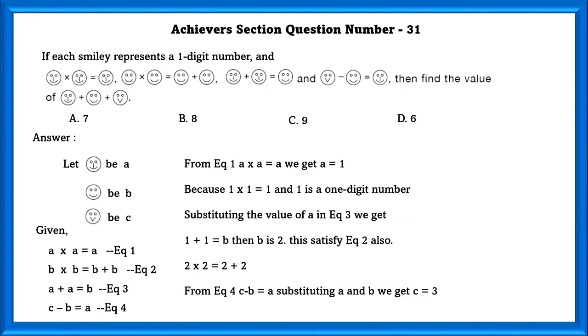From equation 4, c minus b equals a. Substituting a and b, we get c equals 3. Therefore a plus b plus c equals 6.